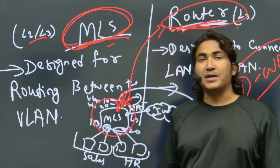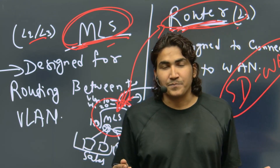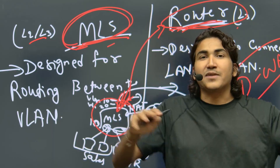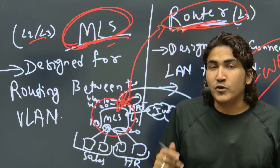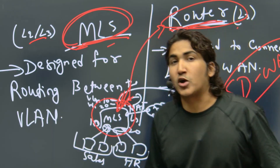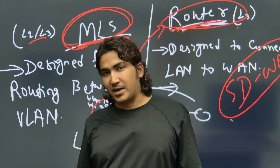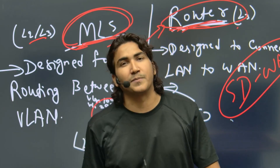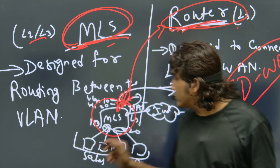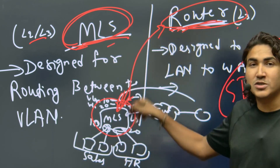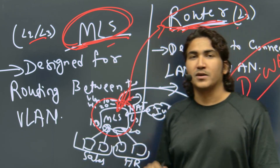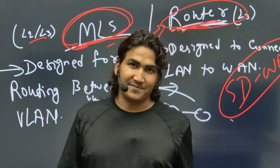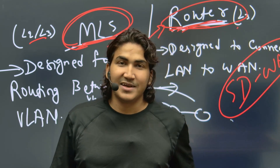Both router and MLS are in use. Before MLS became popular, we used router for inter-VLAN routing with the router-on-a-stick method. Nowadays we use MLS for inter-VLAN routing instead.